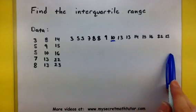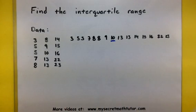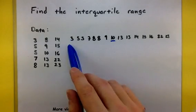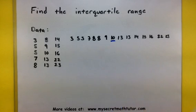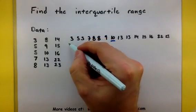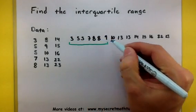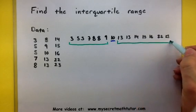Now since we have an odd number of data points here, when I go to find the median of the lower half and the upper half, I'm not going to include the 10.